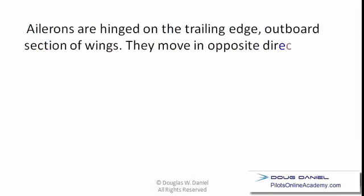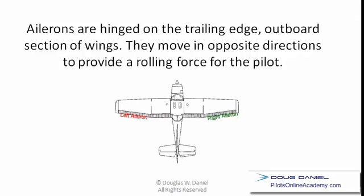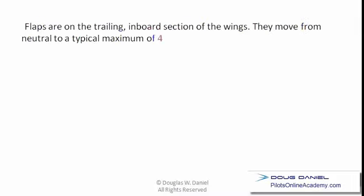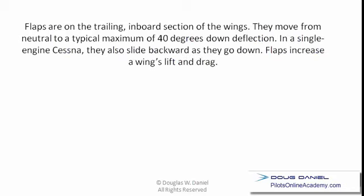Ailerons are hinged on the trailing edge outboard section of the wing and move in opposite directions to provide a rolling force for the pilot. Flaps are on the trailing inboard section of the wings. They move from neutral to a typically maximum of 40 degrees down deflection. In a single engine Cessna, they also slide backwards as they go down. Flaps increase a wing's lift and drag.